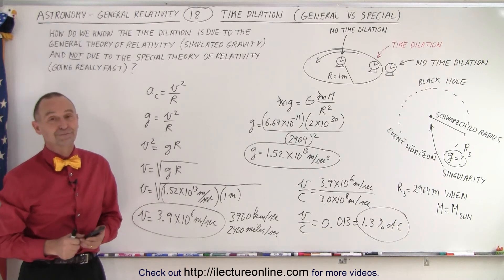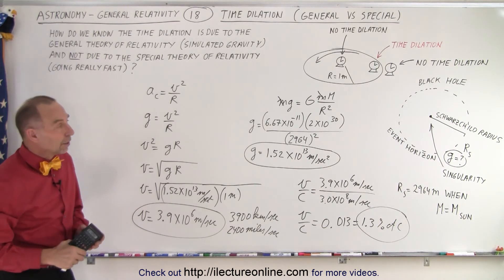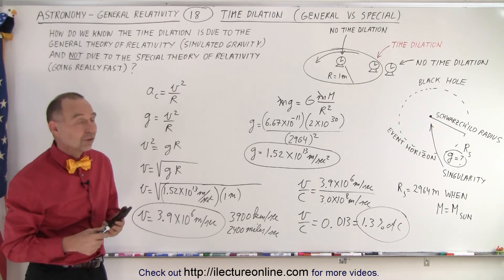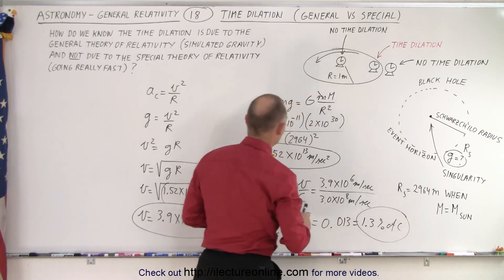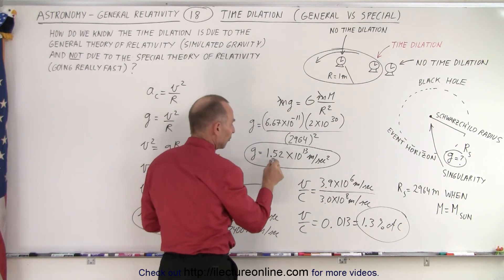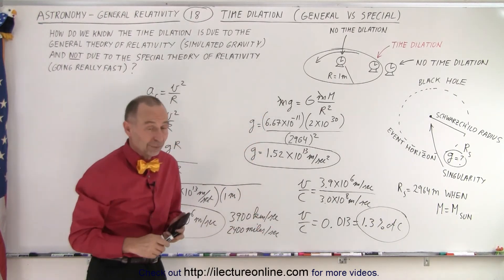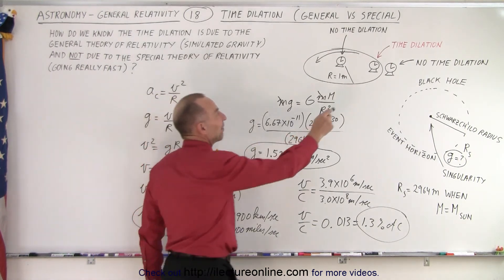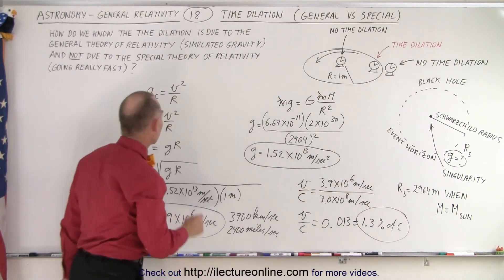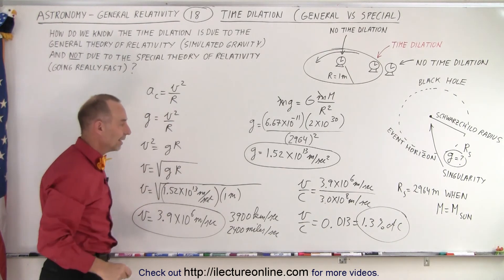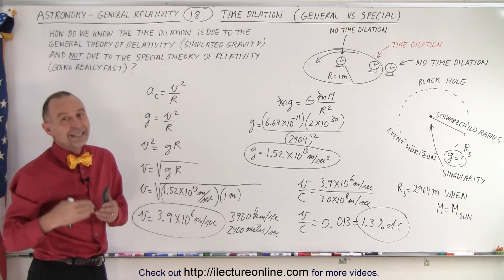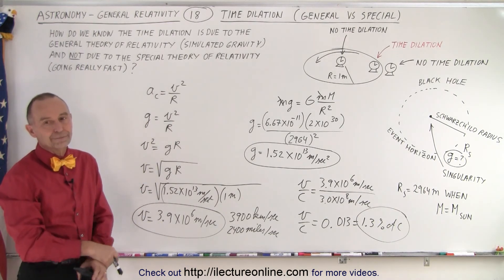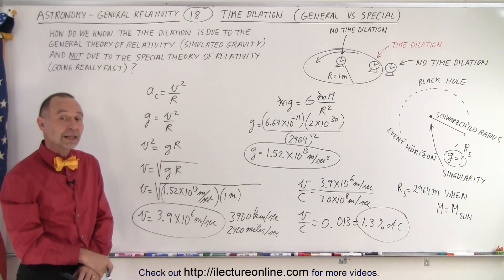And that is how we know it's general relativity at work, not special relativity. We calculate the simulated gravity effect, which gives an acceleration of 1.52×10¹³ m/s² — enormous compared to Earth's gravity. We then use the centripetal acceleration equation to find how fast the clock is moving to produce that simulated gravity. Even though it's moving very fast, it's not nearly fast enough for any speed-based time dilation to matter. It's the gravitational effect that dominates, not the speed effect.